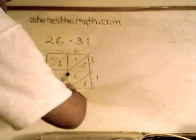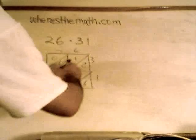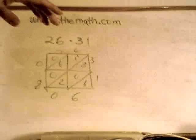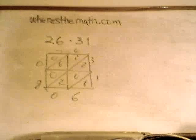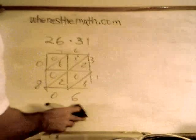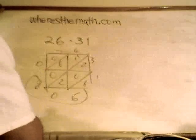And then we sum them up in diagonals, 8 plus 2, 10, carry the 1, 6 plus 1 plus 1, 8, 0, so we're done. The answer was 806.